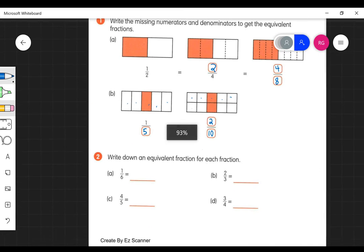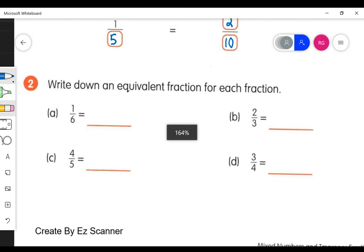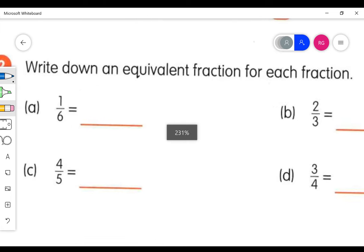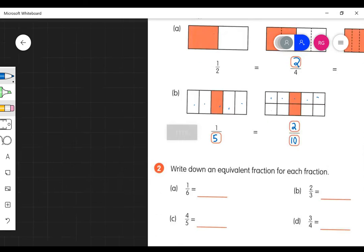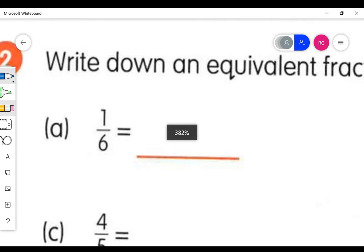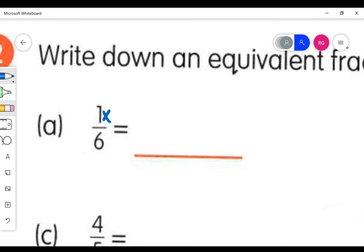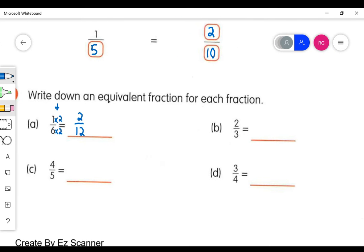All right, so we have those equivalent fractions there. In here, you can write down any equivalent fraction. I'm just going to multiply this one—the numerator by two and the denominator also by two. And that'll give me the equivalent fraction. I'd encourage you to write these down and say what you're multiplying the numerator and the denominator by. That'll be the first equivalent fraction for part A.